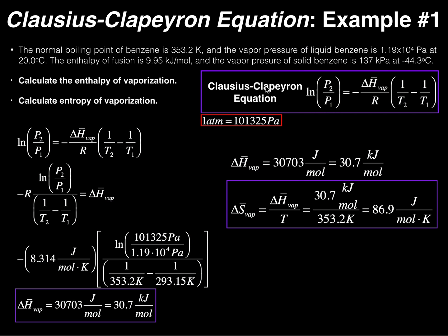Here is our Clausius-Clapeyron equation: the natural log of P2 over P1 equals negative the molar enthalpy of vaporization divided by R, times the quantity 1/T2 minus 1/T1. We want to do two things: calculate the enthalpy of vaporization and then calculate the entropy of vaporization.